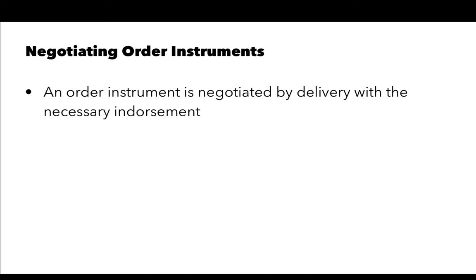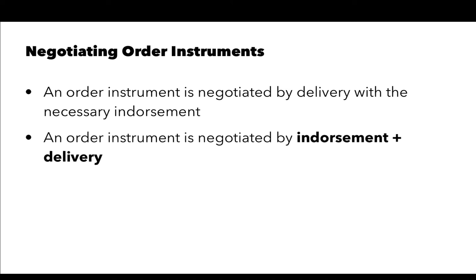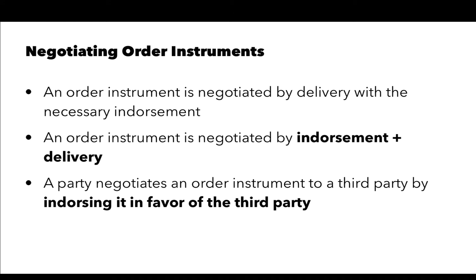An order instrument is negotiated by delivery with the necessary endorsement — both steps are required. A party negotiates an order instrument to a third party by endorsing it in favor of that third party. Negotiating a check, for instance, requires both delivery and endorsement. If Mr. Smith took a check to the bank and gave it to the teller for deposit without signing it, it would be an assignment — the bank would be an assignee and not a holder.